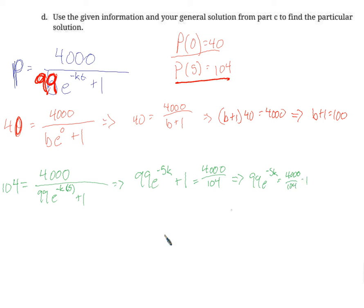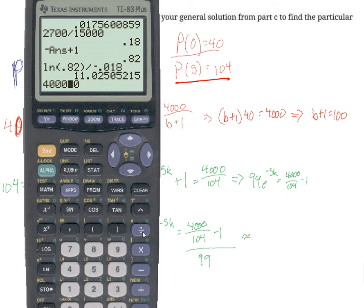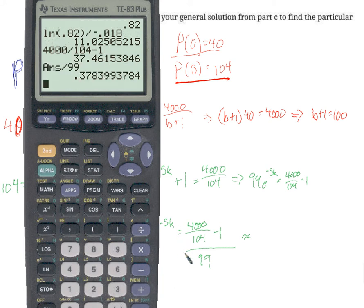Then we'll subtract 1, and we get 99 e to the negative 5k equals 4000 over 104 minus 1, and we'll divide by 99. Let's get an actual approximation for that. So 4000 divided by 104, subtract 1, divide that by 99. I'll say 0.378.